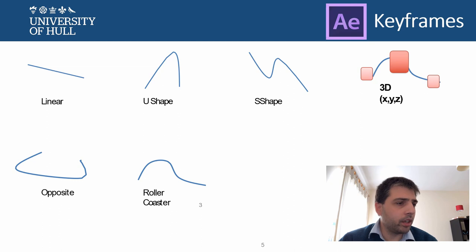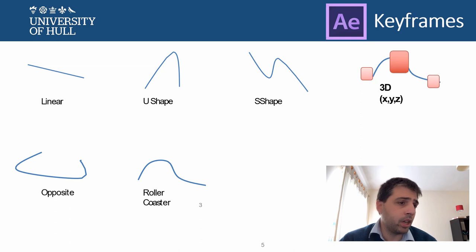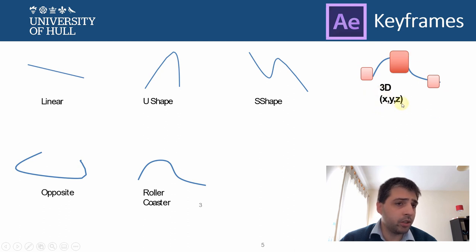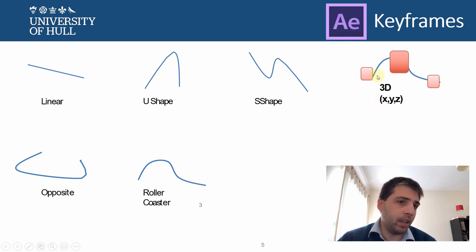The basic difference between digital and traditional animation is that in digital animation you can use interpolation. By telling the computer that you have two positions and specifying the path between them, the computer will move the object during the time you set. In a 3D case, keyframes work with three different kinds of points indicating X, Y, and Z — the dimensions where your object can be or move to.